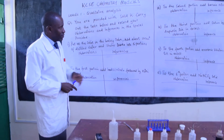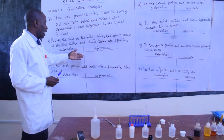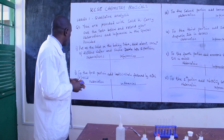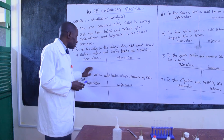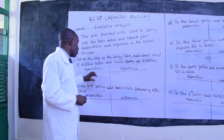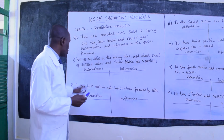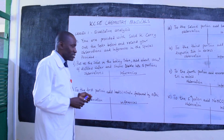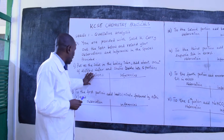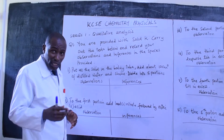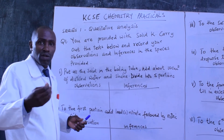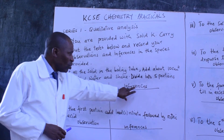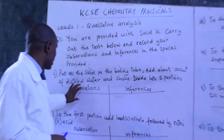As I take you through this, I will explain a few observations. Most importantly, I want us to really understand how we record our inferences and how we can make a conclusion from the observations. When we talk about observations, we are talking about things we can sense with our five common senses — what you see, what you hear, and sometimes you may even be required to touch to describe a solid. With inferences, it is a deduction that we make from the observations.